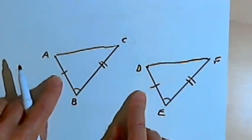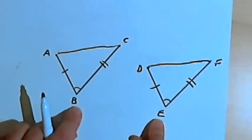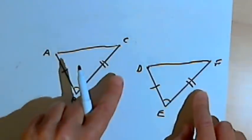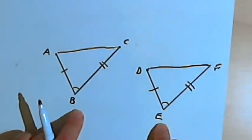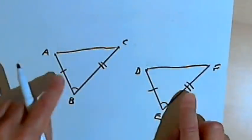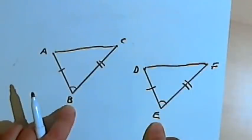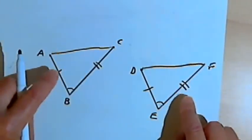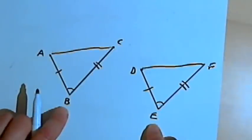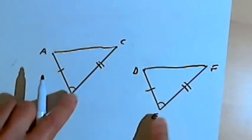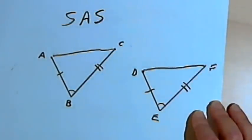I've got a pair of sides that are congruent, then an angle — a pair of angles that are congruent — and another pair of sides that are congruent. That angle has to be between those two sides; these angles are called the included angle. So if we've got two pairs of sides that are congruent and the included angle is congruent, then we've got side-angle-side congruency, sometimes just called SAS congruency.